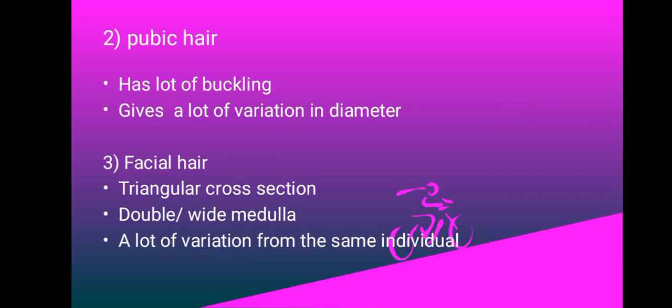The second one is pubic hair. Pubic hair has a lot of buckling—this is one of its special features. It also has continuous or discontinuous medulla.